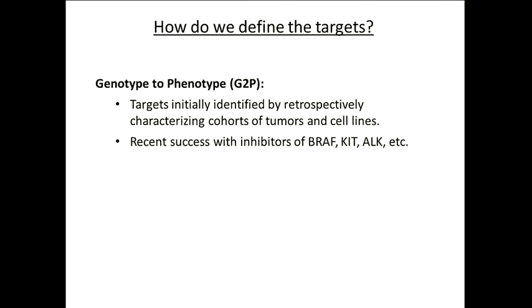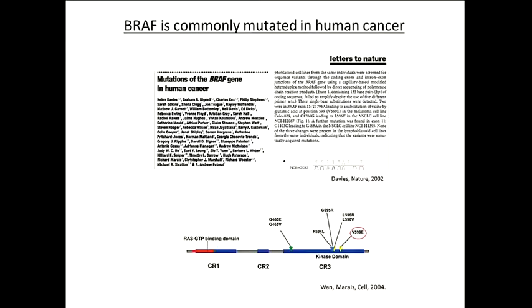We've seen recent success with things like BRAF, and that's really the story that changed my career. I was in Neil Rosen's lab working on HSP90, and we're still trying to get HSP90 inhibitors into the clinic — we haven't been able to do it over the past 20 years. Then this paper came out in the summer of 2002 from the Sanger Institute showing for the first time that BRAF was mutated in human cancer. It was a very simple experiment — really a predecessor of the TCGA.